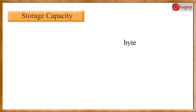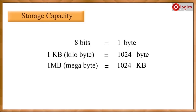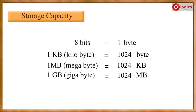One byte is equal to 8 bits. 1024 bytes is equal to one kilobyte, that is KB. 1024 kilobytes is equal to one megabyte, that is MB. 1024 megabytes is equal to one gigabyte, that is GB. 1024 gigabytes is equal to one terabyte.